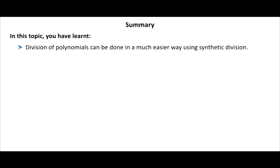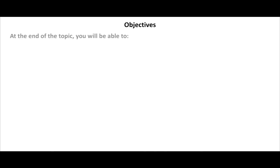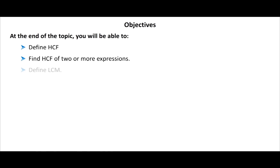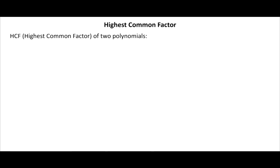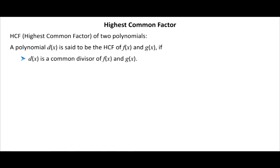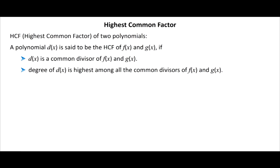In this topic you have learnt that division of polynomials can be done in a much easier way using synthetic division. At the end of the next topic you will be able to define HCF, find HCF of two or more expressions, define LCM, find LCM of two or more expressions, and recognize the relationship between LCM and HCF. The highest common factor (HCF) of two polynomials: a polynomial D(x) is said to be the HCF of F(x) and G(x) if D(x) is a common divisor of F(x) and G(x) and its degree is the highest among all common factors. HCF is also called GCD — greatest common divisor.